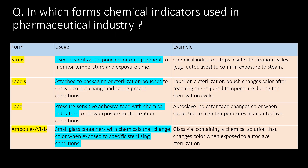In which forms are chemical indicators used in the pharmaceutical industry? You can refer to the bullet tables for different forms of chemical indicators, their usage, and examples. Strip form is commonly used in sterilization pouches or on equipment to monitor temperature and exposure time. Label form is commonly attached to packaging or sterilization pouches. Pressure sensitive adhesive tape with chemical indicators are used to show exposure to sterilization conditions, whereas ampoules or vials are small glass containers with chemicals that color-change when exposed to specific sterilizing conditions.